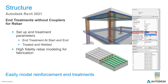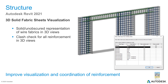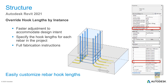In Revit 2021 you can specify the treatment of the ends of rebars either with or without couplers. Fabric sheets now have adjustable visual settings — you can specify them as solid and unobscured in 3D views. You can also override hook lengths by instance, adjusting individual lengths of a series of rebars via the override hook lengths parameter.